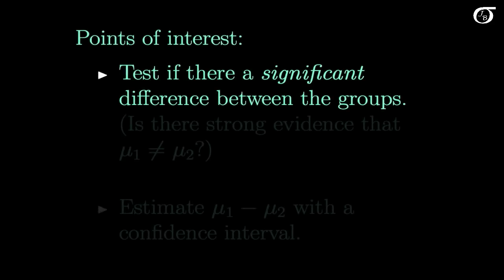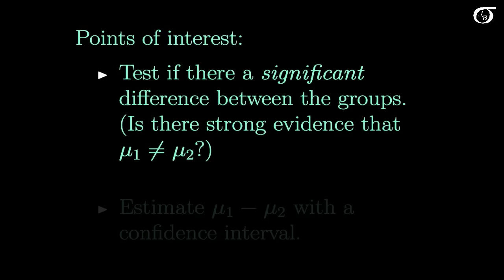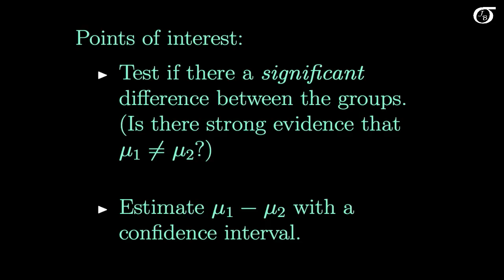Our points of interest: we want to test if there is a significant difference between those groups — is there strong evidence that those two groups have different population means? And we might want to estimate the difference in the population means, mu1 minus mu2, with a confidence interval.